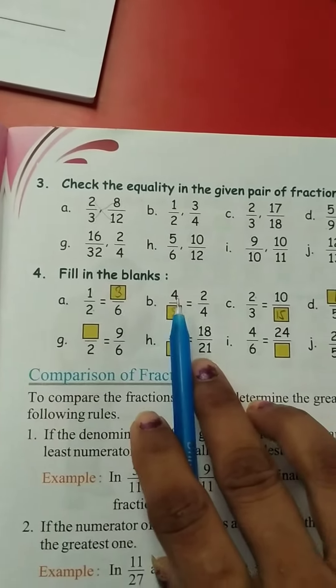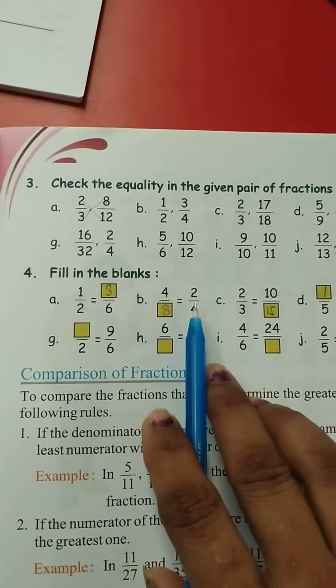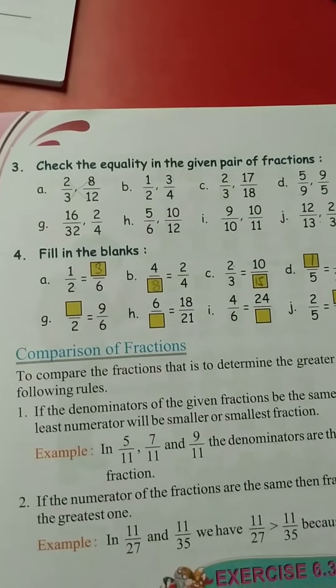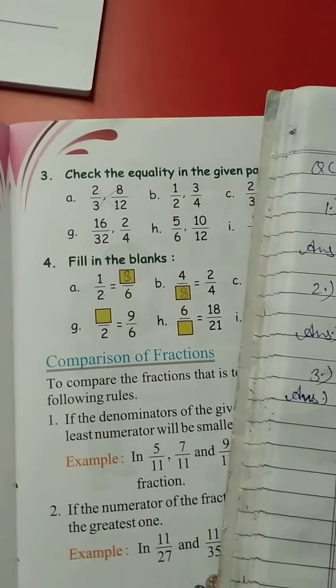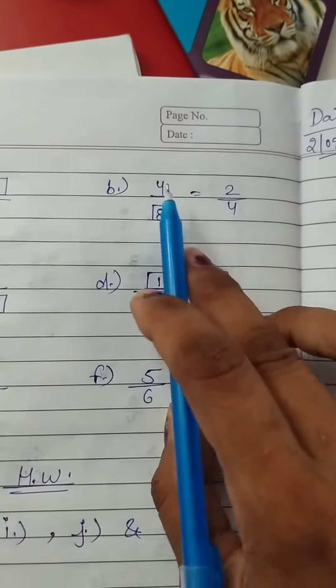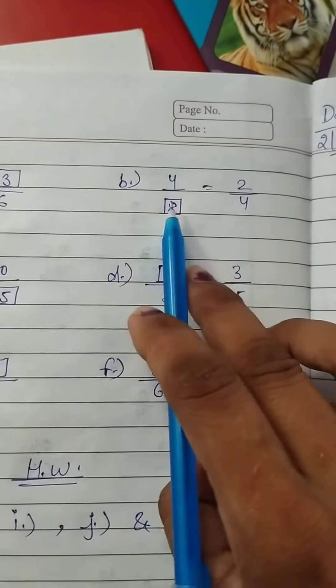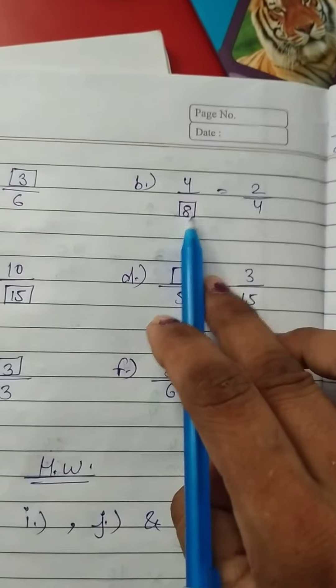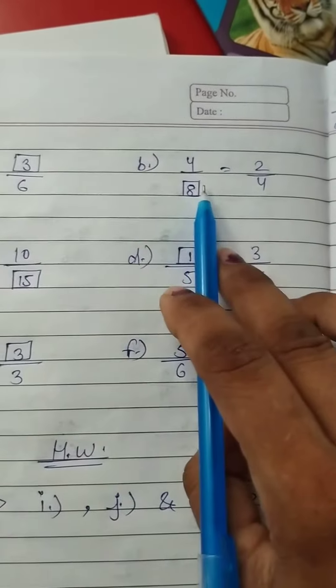Same method. 2 upon dash is equal to 2 upon 4. Students, so here 4 times 4... then here in box we will write 8. 2 times 8 equals 16.